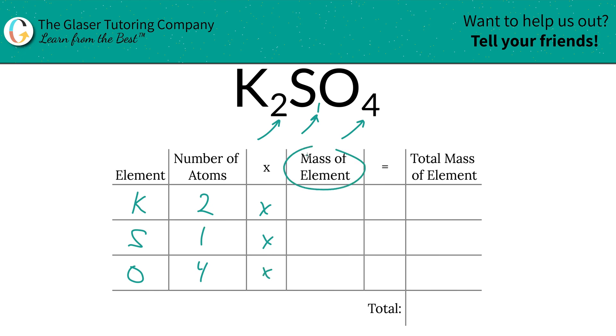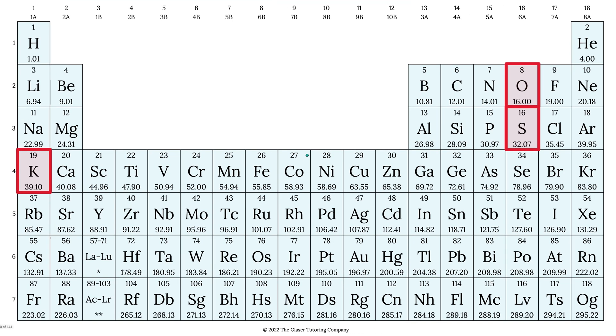Then we're going to multiply it by the mass of each particular element. We find those masses on the periodic table. So potassium is 39.1, sulfur is 32.07, and oxygen is 16.